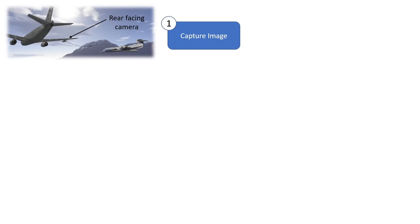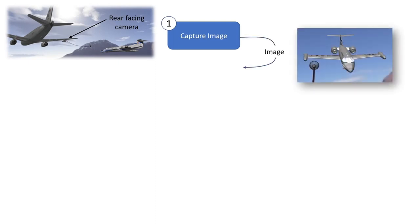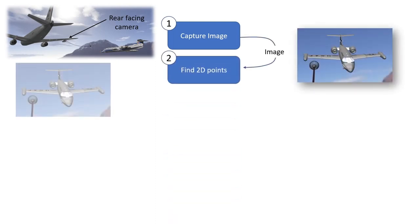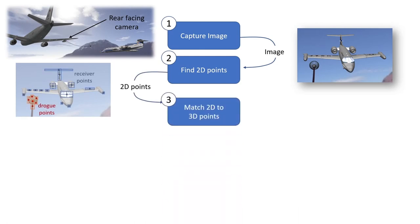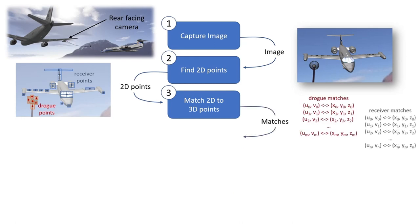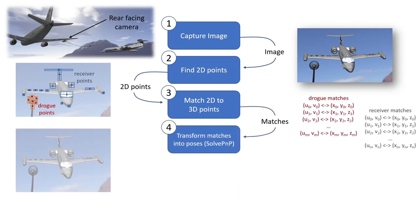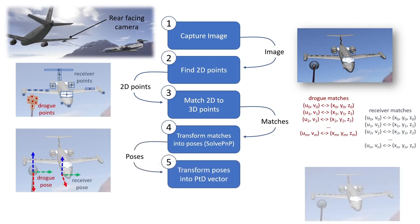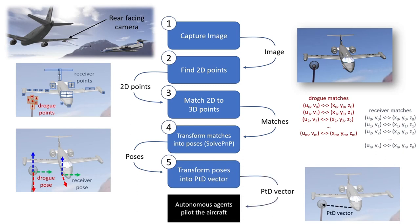Our vision solution consists of five stages. First, we capture an image containing both the probe and drogue. Next, we use machine learning to find 2D points across the two objects within the image. We then match 2D image points with corresponding 3D object points and use the perspective endpoint algorithm to transform the matches into pose estimates. Finally, we convert the object pose estimates into a relative probe-to-drogue vector rotated into the receiver's estimated local reference frame.